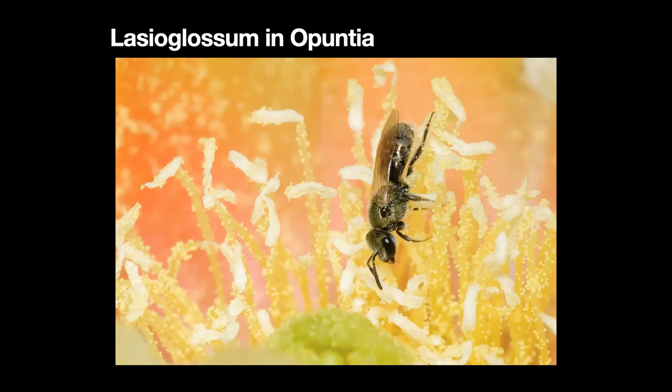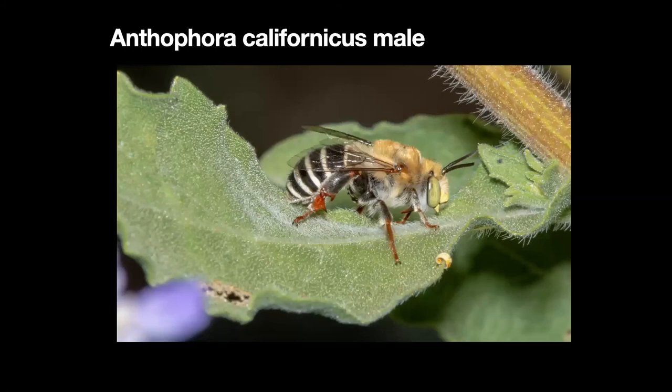Here is the Peponapis — the squash bee — because you can't mistake this one when you see that hind leg. It's a ground-nesting bee and they scent mark everything, which I believe attracts females. The males are territorial but not overly aggressive.